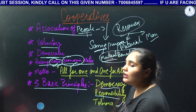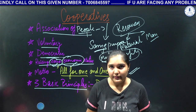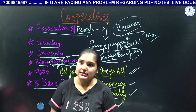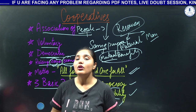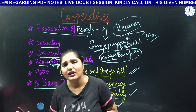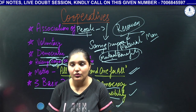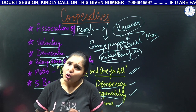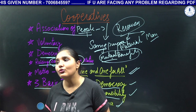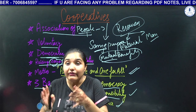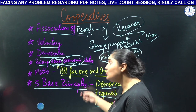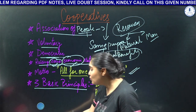The third principle is tolerance. Not every cooperative will be successful from the start — it may fail. If you have no profit, no benefit, and you have no patience to keep it going — no tolerance — then you cannot sustain a cooperative. You need patience and tolerance. These three — democracy, responsibility, and tolerance — are the basic cooperative principles, and when you form a cooperative group, these are the foundational principles.